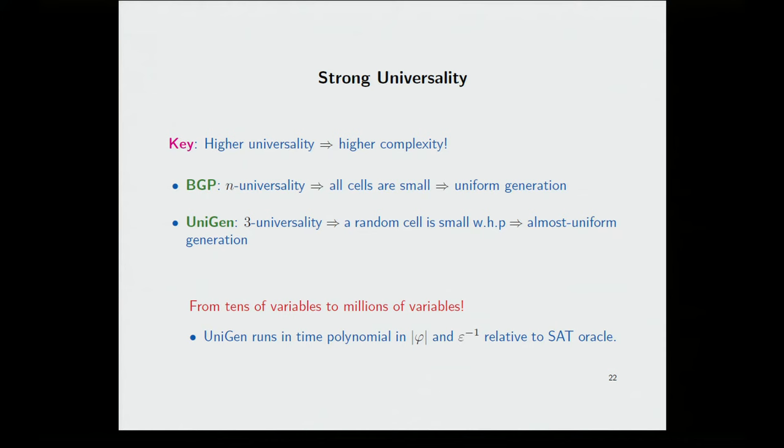And this is a very critical issue because higher universality means higher complexity. So BGP wrote a theoretical paper, so they went, why don't we do n universality, where n is a number of variables. So they had to use polynomials of high degree, but they got nice results. All the cells were small and they got uniform distribution. But this high degree polynomial, when you try to reduce them to SAT, gave us very complex formulas, and therefore we could not, that's why we couldn't scale more than 16 variables.